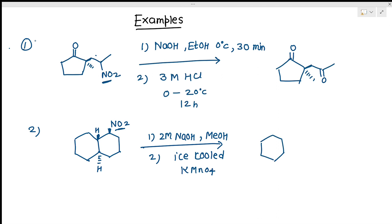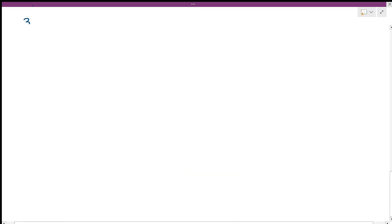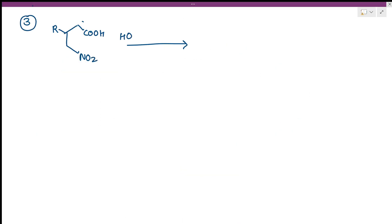In the next example, the compound is treated with acetic acid and HCl and refluxed for 2 hours. As a result of this reaction, the nitro group is converted to a COOH group.